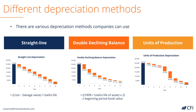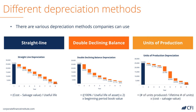Now let's look at the units of production method. As you can see in this example, the depreciation expense varies each year because it's based on the output that the assets produce. To calculate it, you take the number of units produced in the period and divide it by the lifetime number of units that remain to be produced by those assets. That will result in a percentage which is then multiplied by the cost of the asset minus its salvage value.